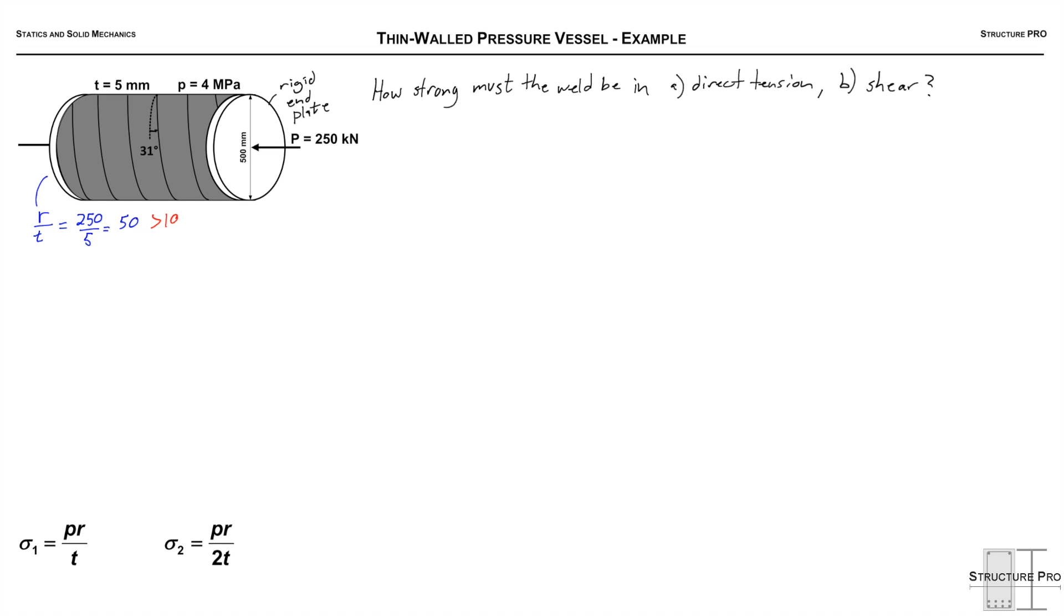We'll do the radius divided by the thickness. We get 50, that's greater than 10. We know from our previous video anything greater than 10 you're good to go. You got less than 5 percent error treating it like that.